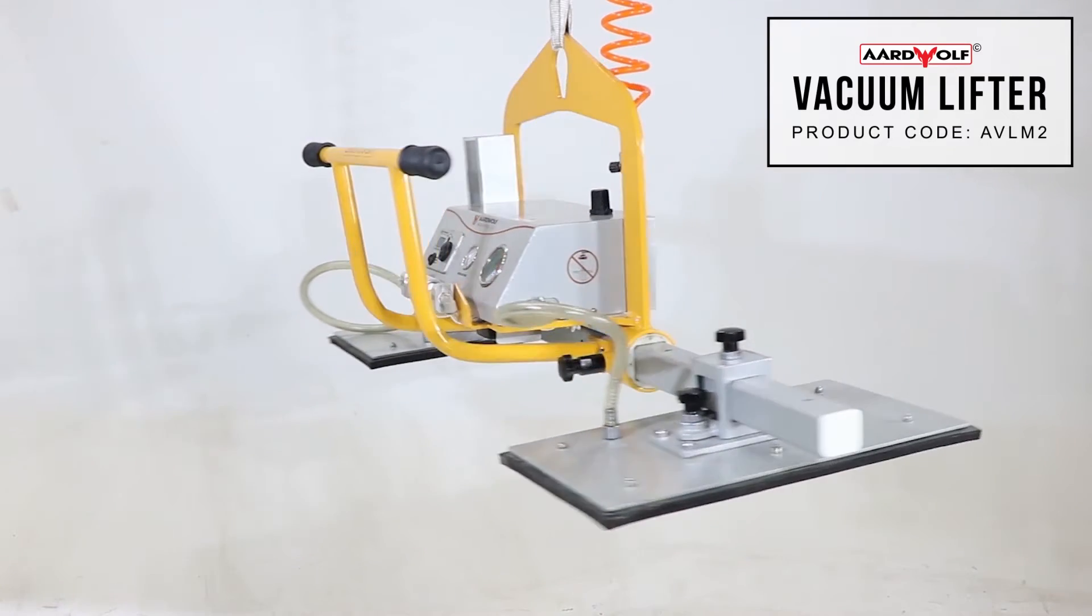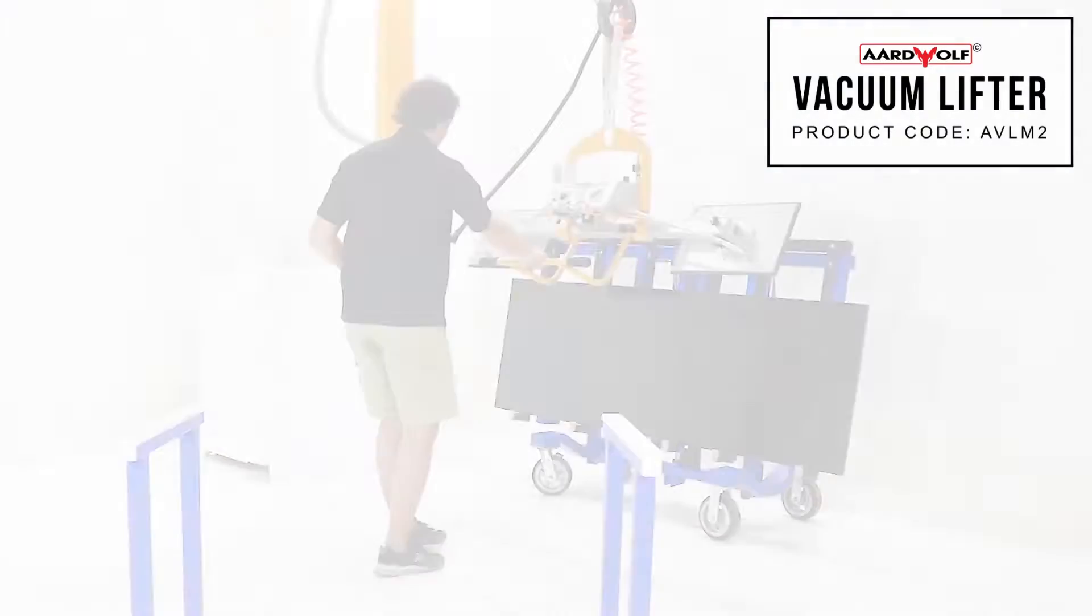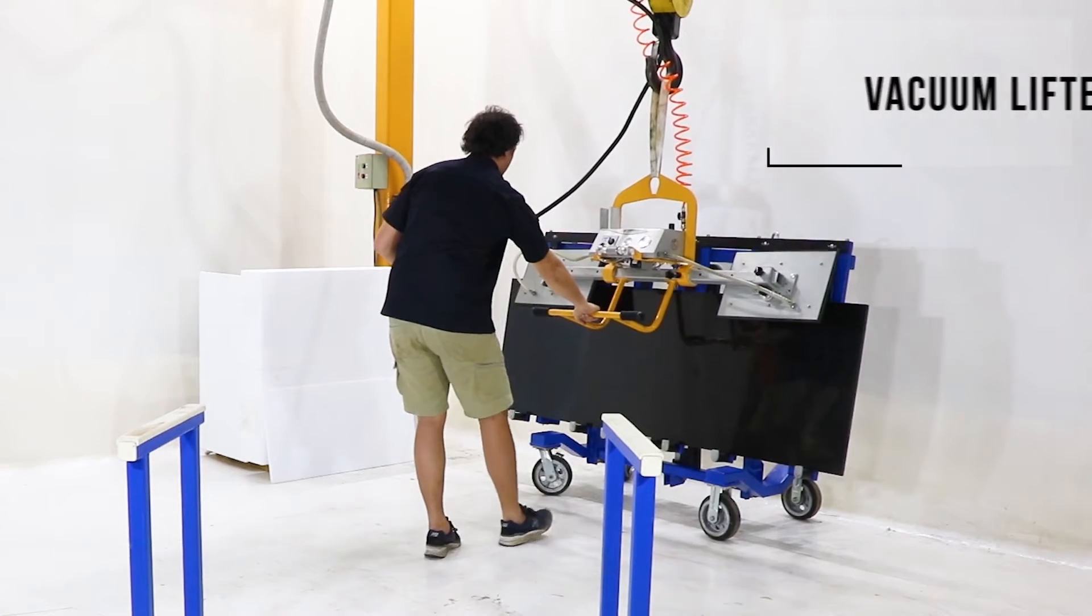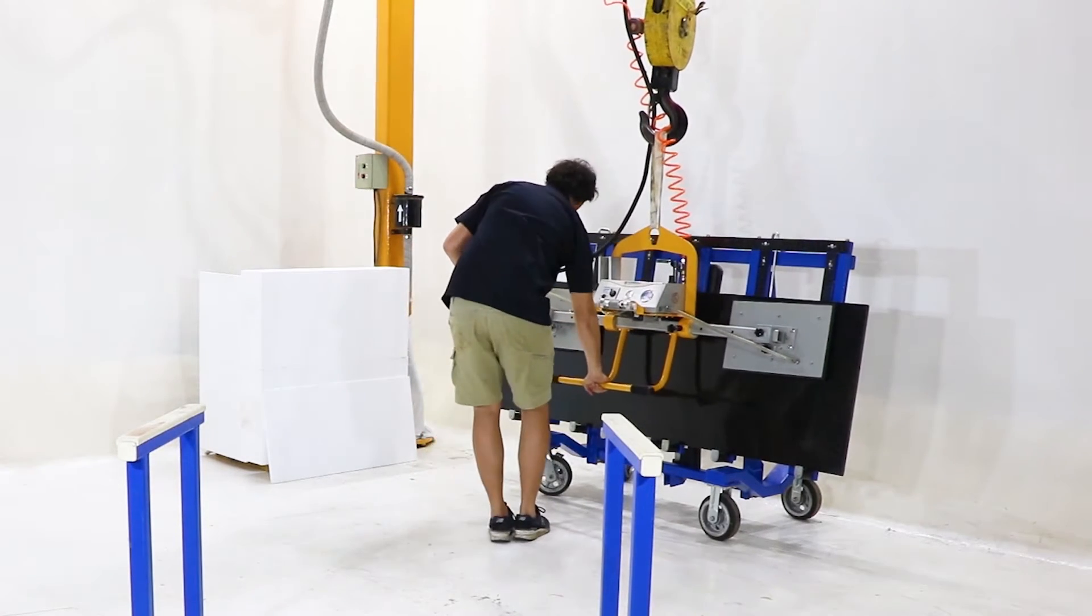Vacuum Lifter AVL-M2 is an air-operated vacuum lifter designed to lift smooth or rough marble, granite, limestone, sandstone, and concrete slabs.